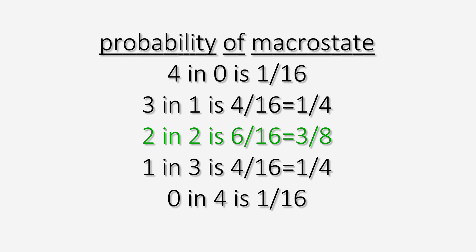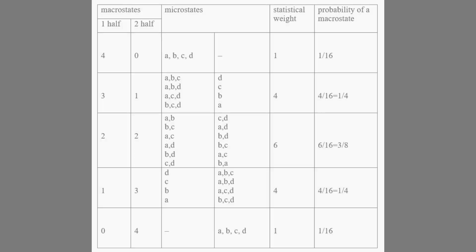The least likely distribution is zero and four, or four and zero. To illustrate this, let's summarize in a table.